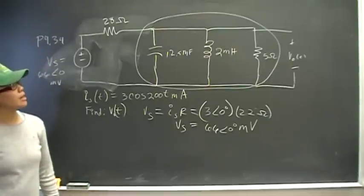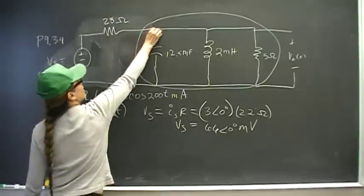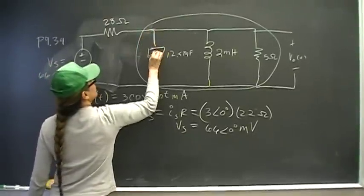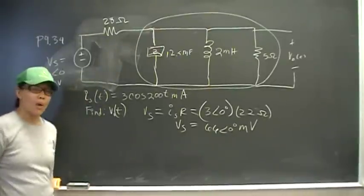Then look what I have. I will have something—here's my Z equivalent—I will have a voltage divider circuit, and I know how to solve those. So let's do that.